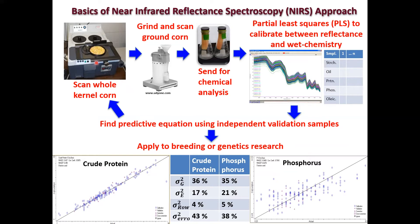You use a benchtop NIR machine that scans samples with near-infrared light and measures absorbance across thousands of spectral wavelengths. We grind the corn, scan it again, and send it for chemical analysis — outsourcing most of that to develop a partial least squares training calibration. In this way we can predict thousands of samples while only spending wet chemistry money for a couple hundred. We've done this for starch, oil, protein, phosphorus, oleic acid, and lots of other traits — you can really develop these calibrations for anything.